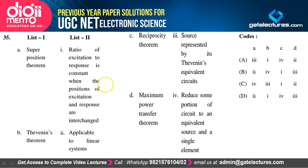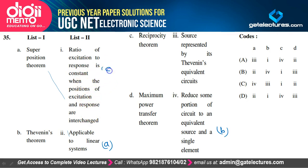Matching circuit theorems: Superposition theorem is applicable to linear systems (A→2). Thevenin's theorem reduces a portion of the circuit to an equivalent source and single element (B→4). Reciprocity theorem — ratio of excitation to response is constant when their positions are interchanged (C→1). Maximum power transfer theorem is applicable to the Thevenin equivalent circuit (D→3). Option B is the correct option.